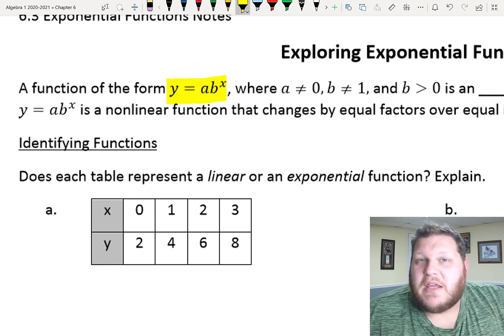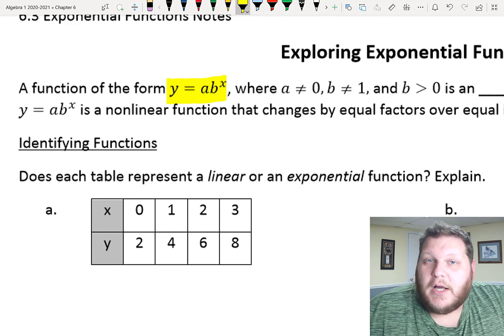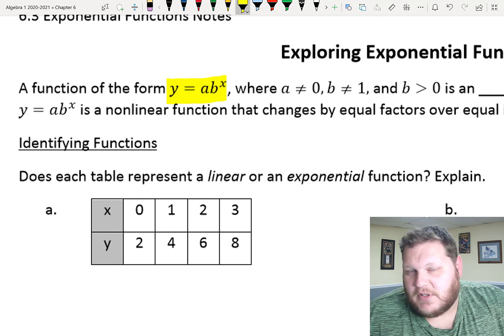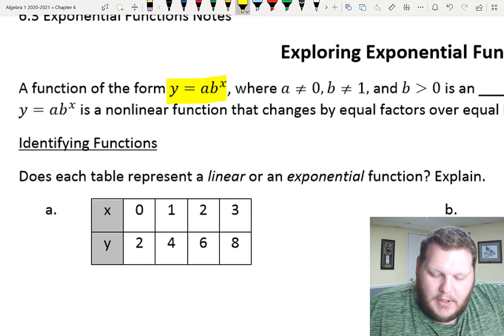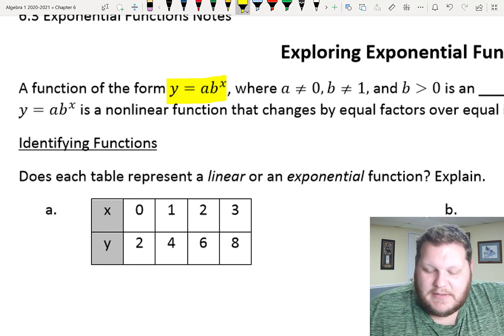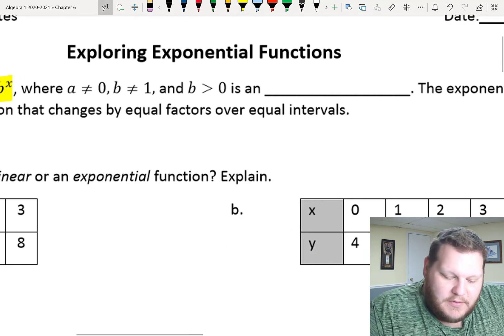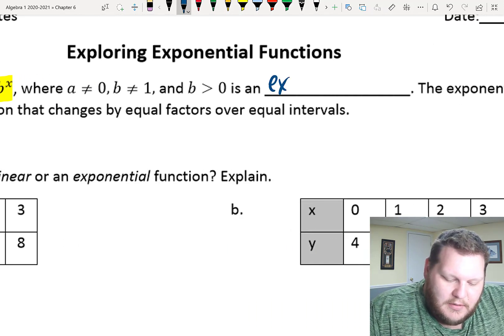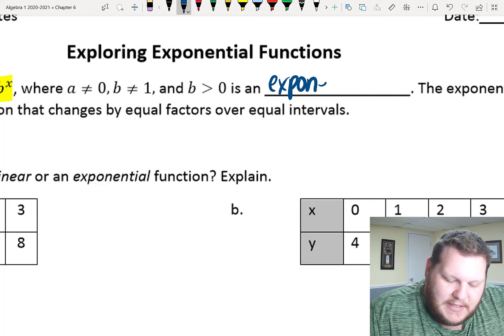We have to make sure that that base, my b value, can't be 1, because otherwise I'm just going to be continuously multiplying by 1, and that it is positive, so it's bigger than 0, bigger than 0 and not 1. If all of those things are true, then we are dealing with an exponential function.